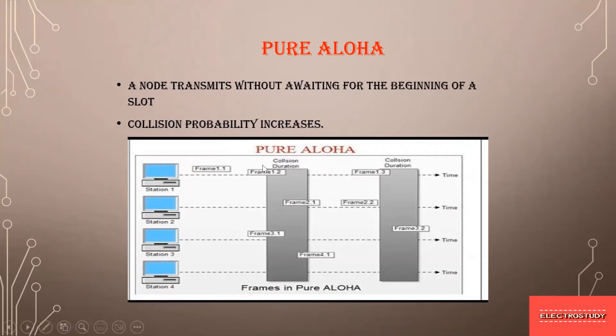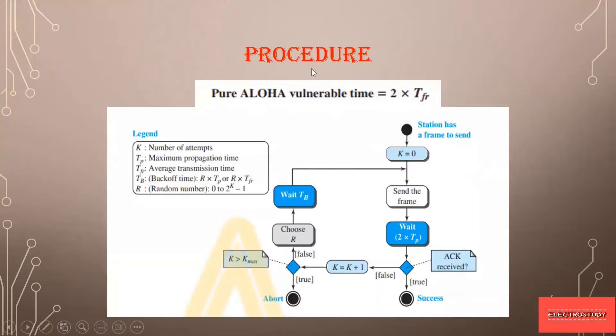In Pure Aloha, it is clear that the collision probability is very high. Here, the node transmits without waiting. It will not wait for the receiver to request the frame. As soon as the frame is formed, it will start transmitting the frames to the receiver end. In Pure Aloha, when the probability of collision is at the higher side, you have to see what are the procedures that are followed to send this frame from one end to the other. This is the procedure.